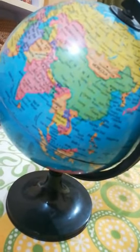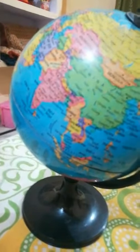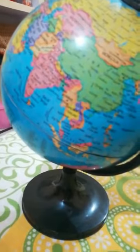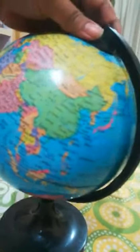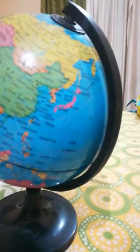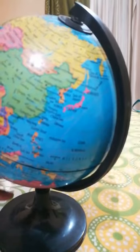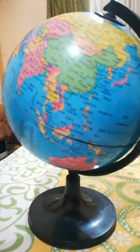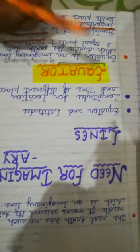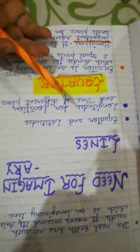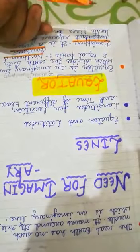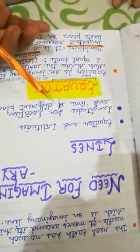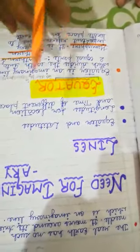In the previous video we understood the concept of the globe. Now we will understand why there was a need for imaginary lines. The answer is: to find the location, date, and time of a place, we need these imaginary lines.